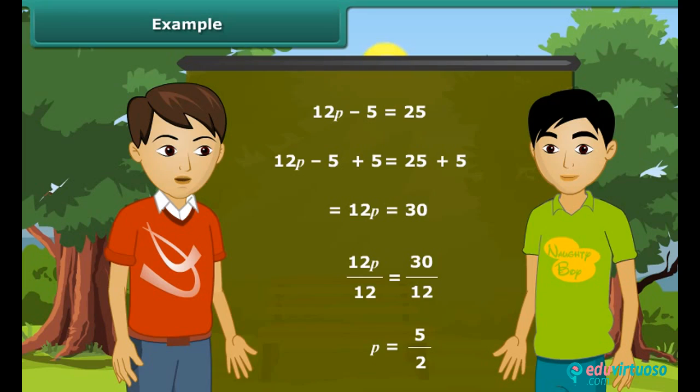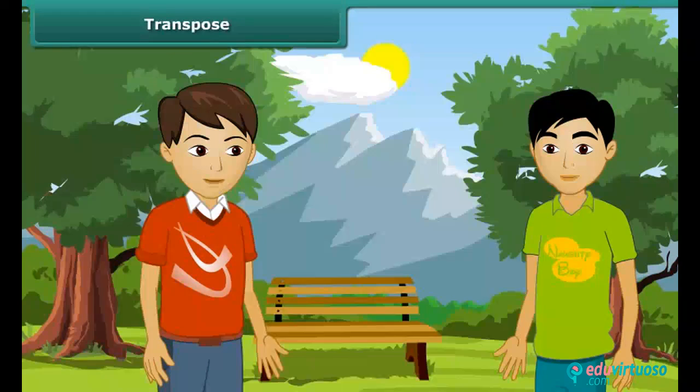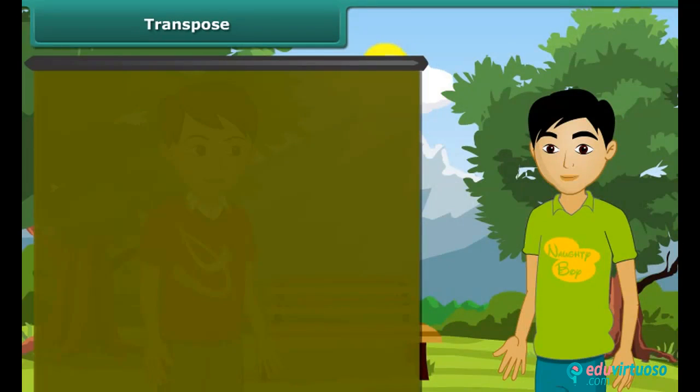What is transposing? Come, I will explain you. Transposing means changing side. For example, in this example, we have changed the side of 5. And when we transpose any number, we change its sign. Plus becomes minus. Multiplication becomes division. And now by transposing 12, P becomes 30 divided by 12, which is equal to 5 upon 2.